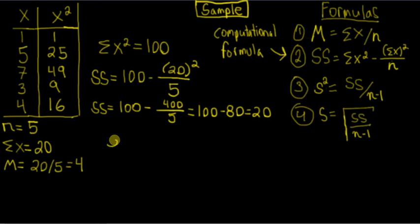Next thing to calculate is the sample variance. The sample variance, you can see the formula right here. It's sum of squares divided by n minus 1. So sum of squares we just calculated is 20, and n is 5 minus 1. So we get 20 divided by 4, which equals 5.